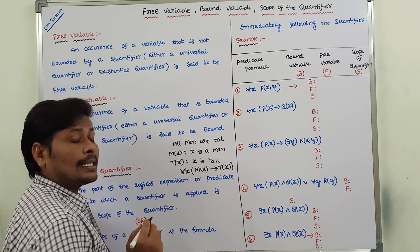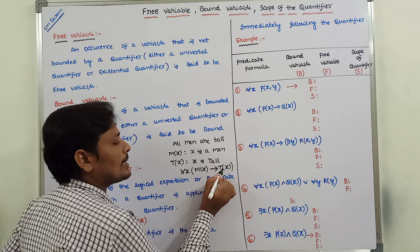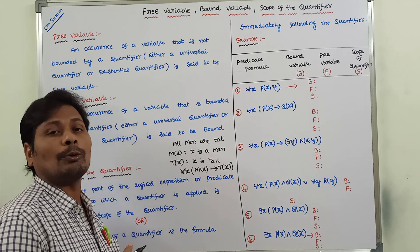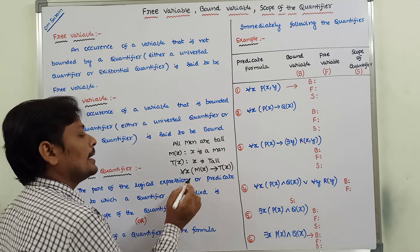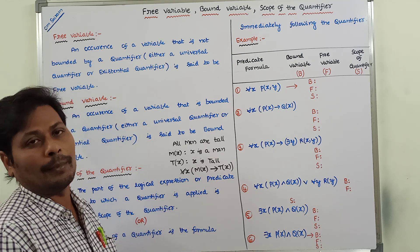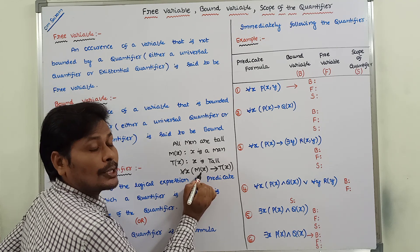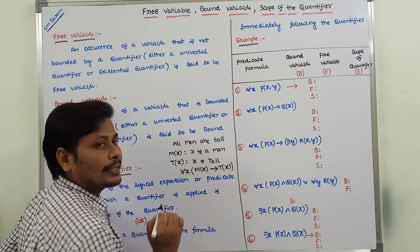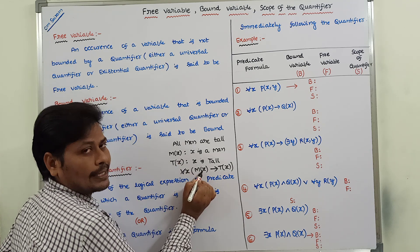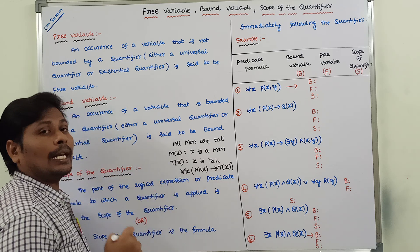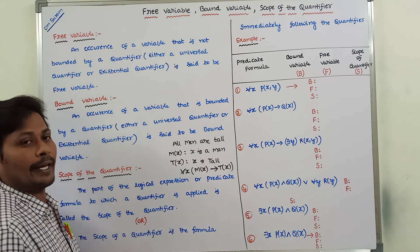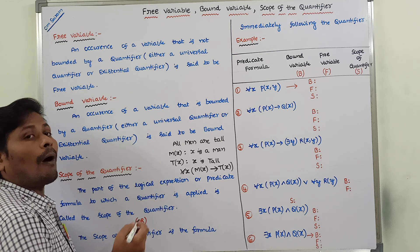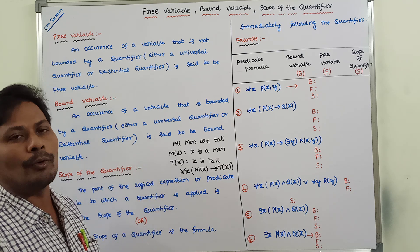Now, what is a bound variable? The variable here is X. An occurrence of a variable that is bounded by either a universal quantifier or an existential quantifier is called a bound variable. Here, X is the variable in both M(X) and T(X). Since the variable X is bounded by the universal quantifier, X is called a bound variable.